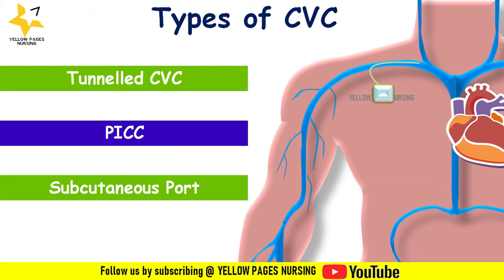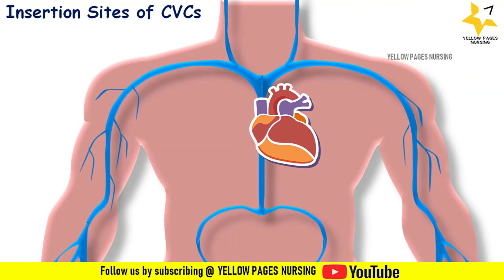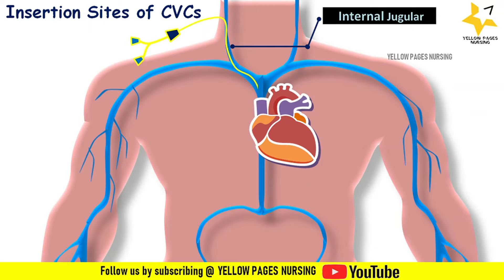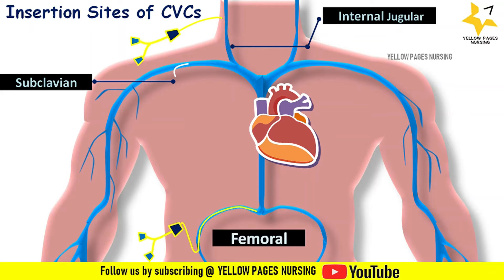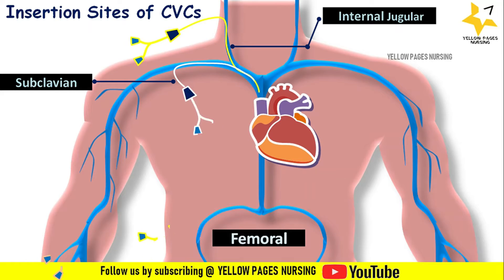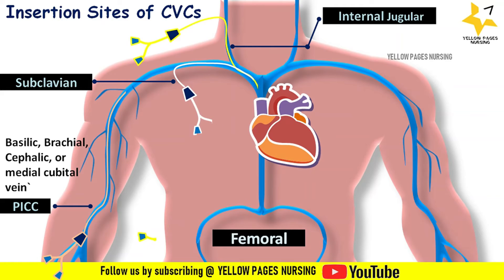Insertion sites of central venous catheters include the internal jugular vein (right or left), subclavian vein (right or left), and femoral vein. For a femoral line, the catheter tip rests in the inferior vena cava; for other lines, it rests in the superior vena cava. PICC line sites include the basilic, brachial, cephalic, or medial cubital veins.